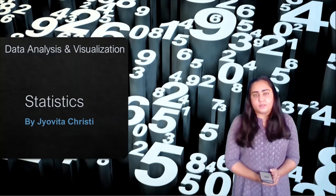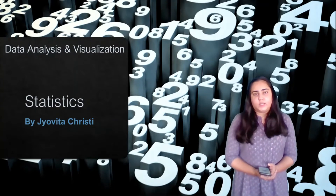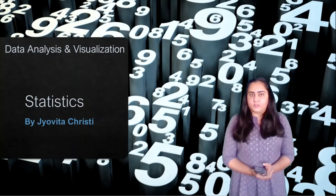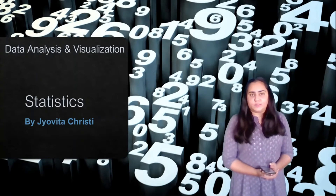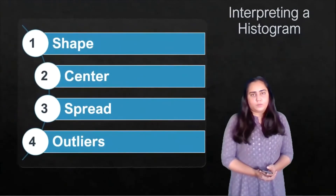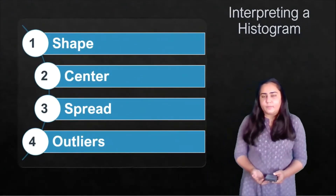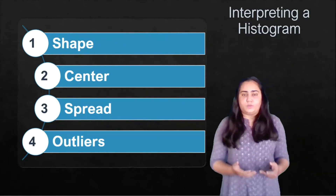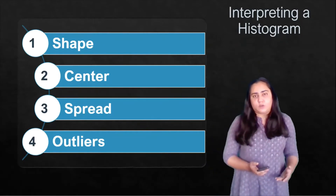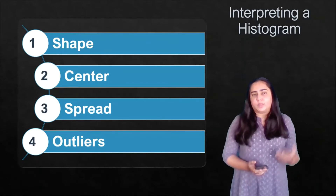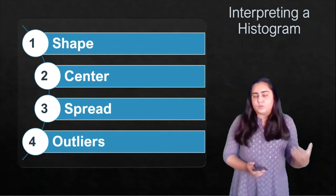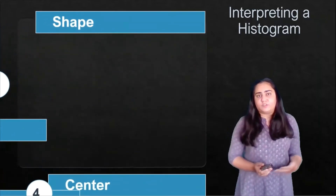Hello and welcome back to Data Analysis and Visualization. I'm Jovita Christie and in this video I'm going to continue with exploratory data analysis and show you how you can interpret a histogram, which I explained in the previous video. We saw earlier that a histogram has four properties with which you can interpret it: shape, center, spread, and outliers. Now with examples I'm going to show you what these properties actually mean.